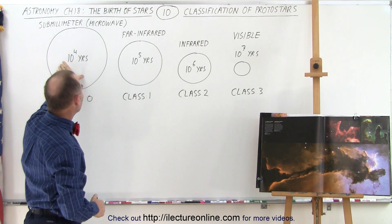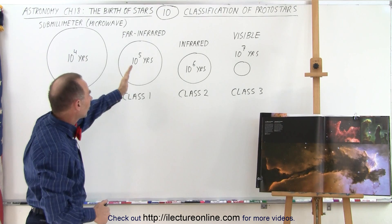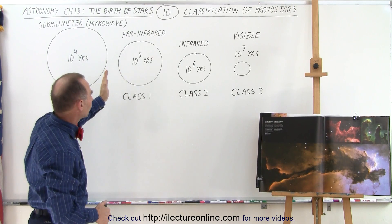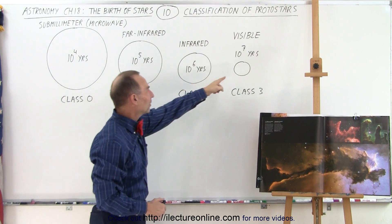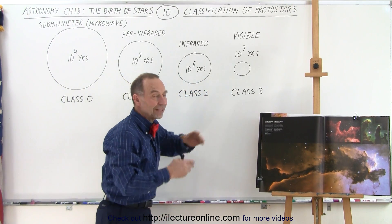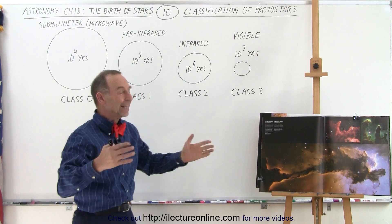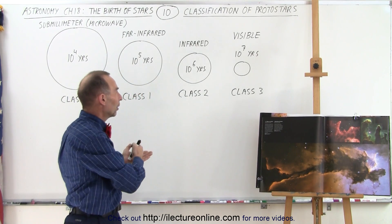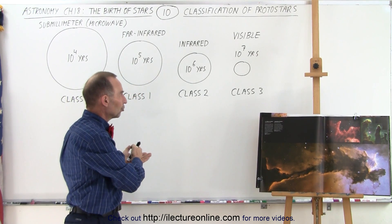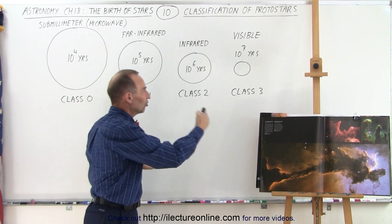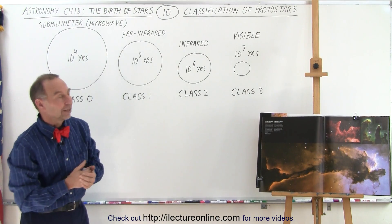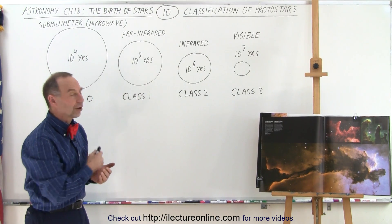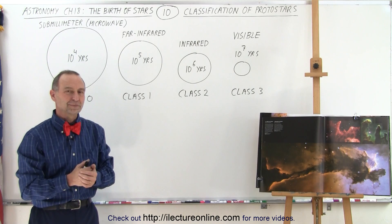Notice that initially the time it takes to go to the next stage is very quick, and then slowly but surely it gets into the stage where it takes about ten million years to turn from the beginning of the protostar into a legitimate star. That's how we classify protostars according to their radiation.